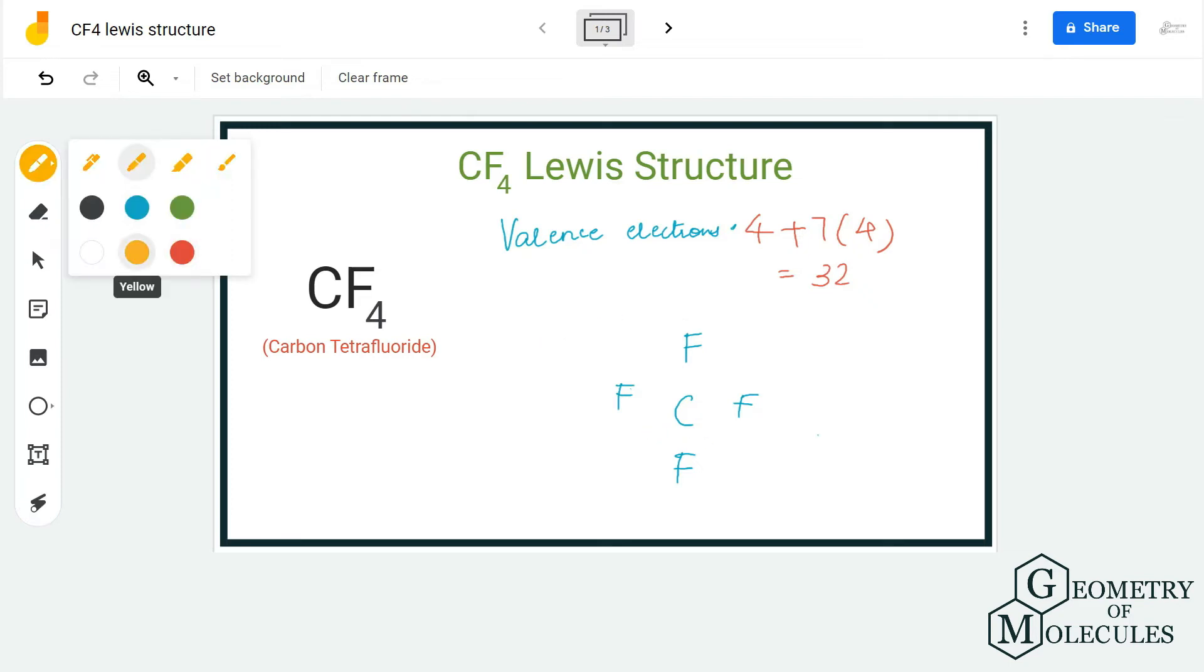Fluorine requires one electron to complete its octet. As carbon is in the center, it will share one of its electrons with fluorine to form a bond. We are going to place a pair of electrons between each fluorine and carbon atom.